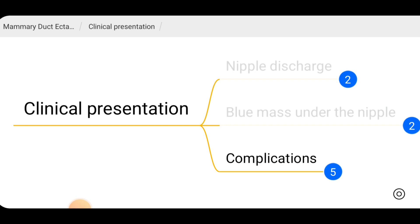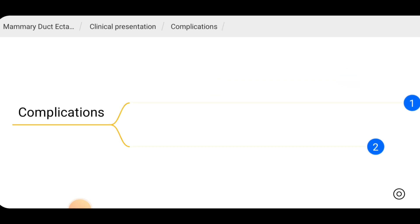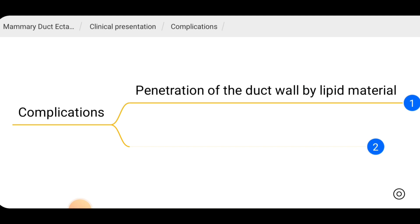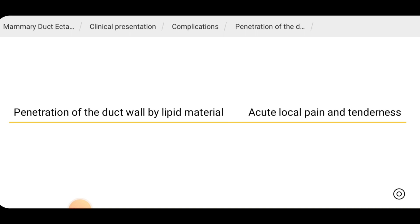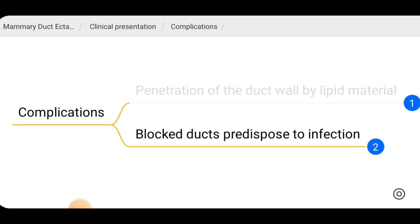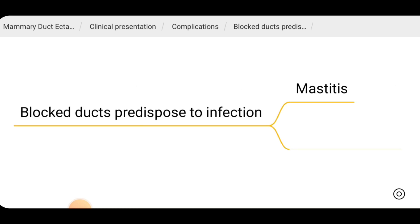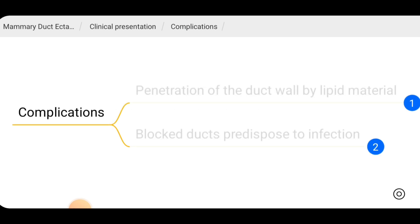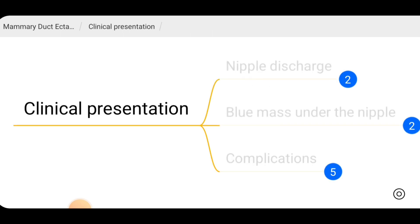The complications of mammary duct ectasia include acute local pain and tenderness due to periductal inflammation from material penetrating the duct wall. Blocked ducts also predispose to infection, causing mastitis and breast abscess. Those are the possible complications of duct ectasia.